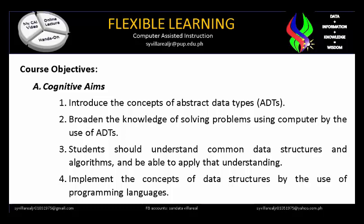The course objectives — Cognitive Aims: 1. Introduce the concept of abstract data types, or ADTs. 2. Broaden the knowledge of solving problems using a computer by the use of ADTs. 3. Students should understand common data structures and algorithms and be able to apply that understanding. 4. Implement the concept of data structure by the use of programming languages.